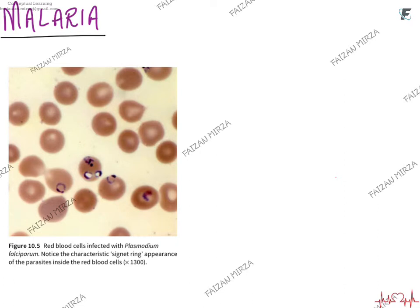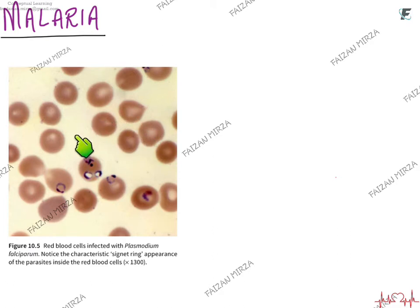Malaria is caused by a pathogen which is a plasmodium. Figure 10.5 that you can see here represents a blood film seen under the microscope at 1300 magnification. You can see the red blood cells, and inside some of these are ring-like structures — these are the plasmodiums present in the blood film of this person. So this person can be diagnosed with malaria on the presence of these malarial plasmodiums in his or her blood.